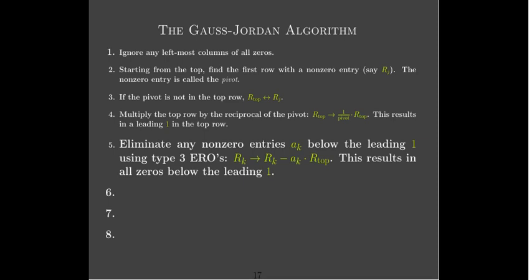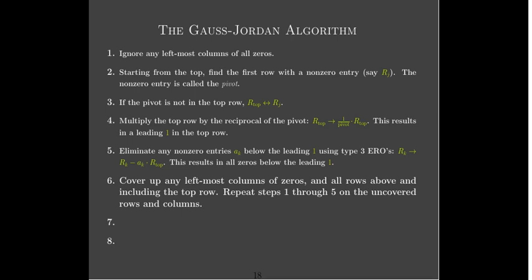Now we use those type three EROs to get zero entries below that leading one. We take whatever number is there, multiply it times the top row, and subtract that from the row we're working on. So now we've essentially processed one column and we move to the next column, repeating the process but moving down one row. We cover up any leftmost columns of zeros and all rows above including the top row just processed, then repeat these steps to get another leading one with zeros below.